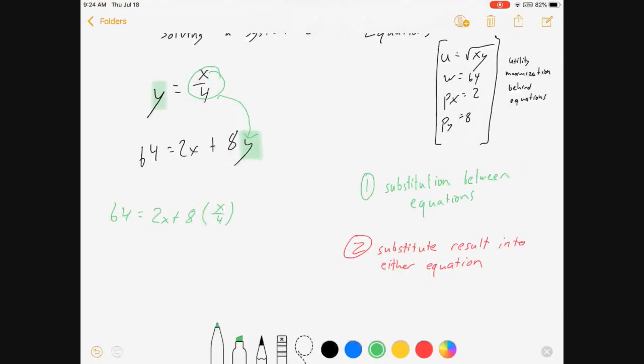So it'll look like this. In this case, it's probably the most straightforward way to do it. That's 64 equals 2x plus 2x. 64 equals 4x. x equals 16. That is my result from step one. I found the x that makes these two equations be equal to each other.